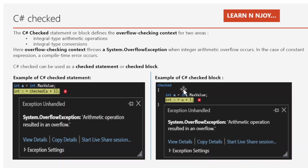Now let's look at the checked block example. We write the checked keyword followed by opening and closing curly braces, and inside we write our statements. The checked context gets applied to all statements within those braces. So when we add 1 to a and assign the result to b, it throws a System.OverflowException — even though we haven't written the checked keyword inside the individual statement.